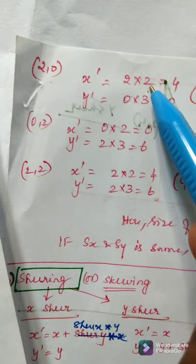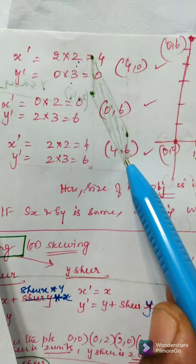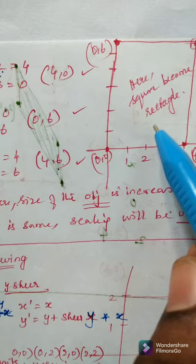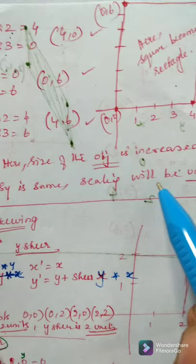See here. x dash equal to 2 into 2. This is the scaling factor x and scaling factor for y. And, by substituting these values here, we are getting 4, 0. Similarly, for 0, 2, 0, 6, 2, 2. We are getting 4, 6. So, the square, original diagram is a square and it has become a rectangle here after scaling. The size of the object is increased.